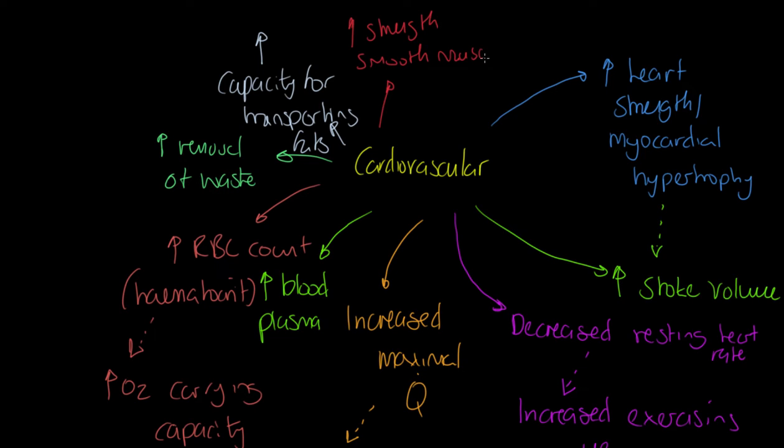We also get increased strength of smooth muscle in blood vessels. For example, our venous return mechanism of the smooth muscle becomes more efficient. We also get capillarization - we get more capillaries at both the alveoli and at the muscle. That's useful because now we've got a greater exchange area for diffusion, therefore we can exchange more CO2 and oxygen at the relevant place and we're more efficient as a result.